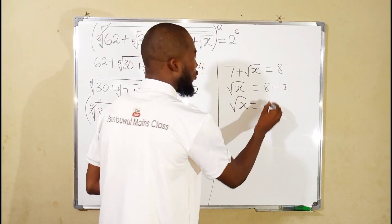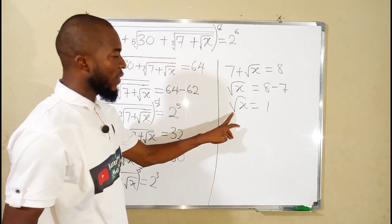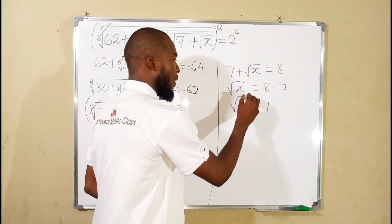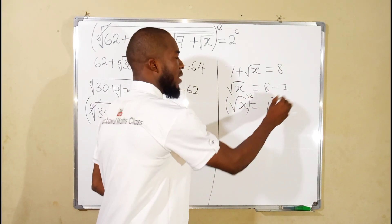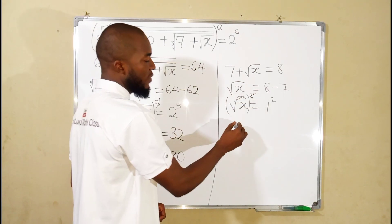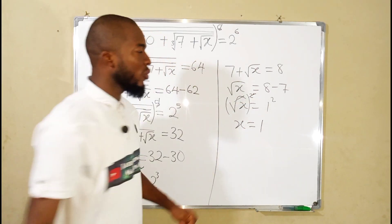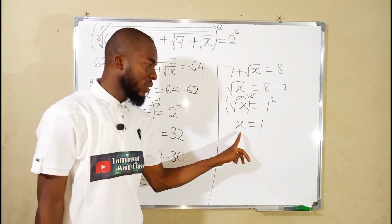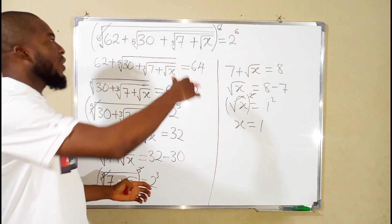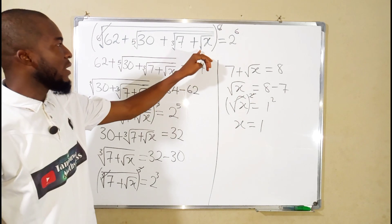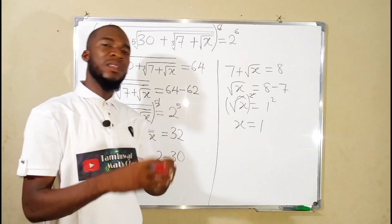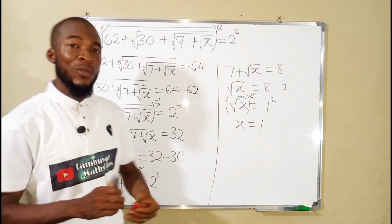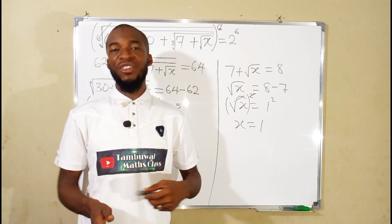The square root of X equals 1 because 8 minus 7 is 1. Finally, since this is a square root, the inverse is to square both sides. This cancels the square root, leaving only X, and on the right we have 1 squared which is 1. So the value of X in this equation is 1. If you like, you can substitute X equals 1 back into the main equation and you should obtain 2. Thank you for watching, have a nice day, and don't forget to share with your learning colleagues.